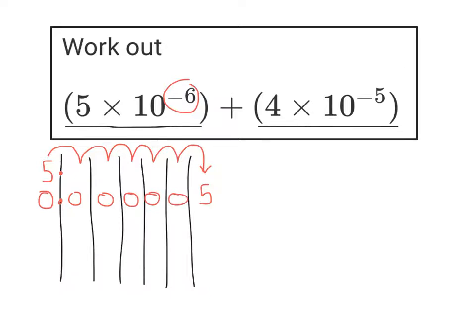I've also got the 4 times 10 to the minus 5. So it's going to move 5 times in the place value table smaller again. Decimal is not going to move. So 1, 2, 3, 4, 5. So that 4 is going to go there. Decimal doesn't move but I need to put in my zeros in place.